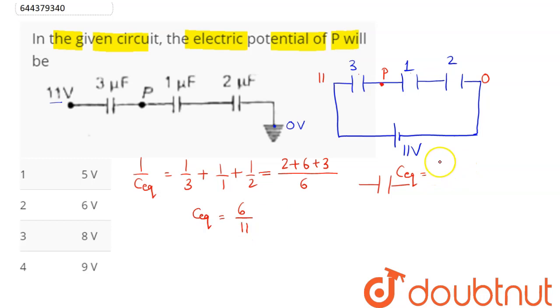C equivalent value is 6/11 and the battery is 11 volt. The charge coming out of this battery will be Q = C_eq × V, which is 6/11 × 11. So 6 microcoulomb.